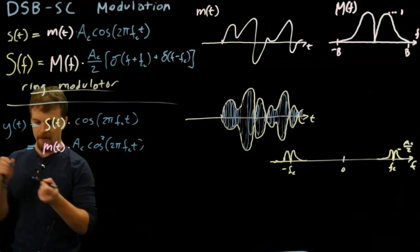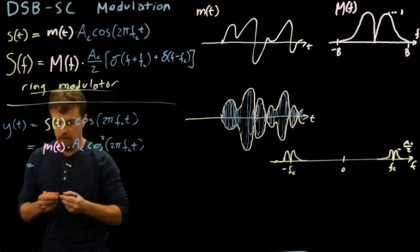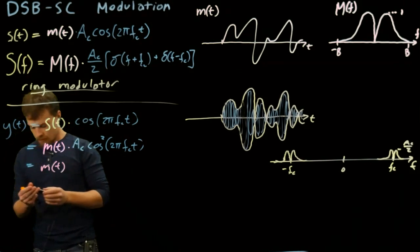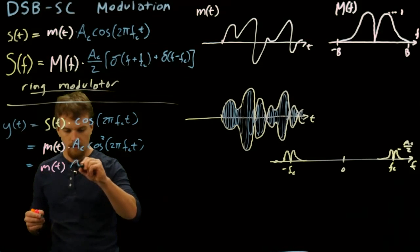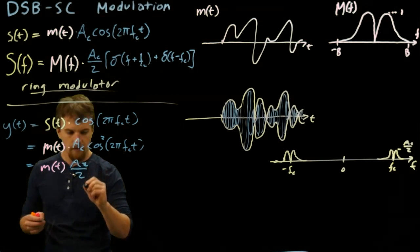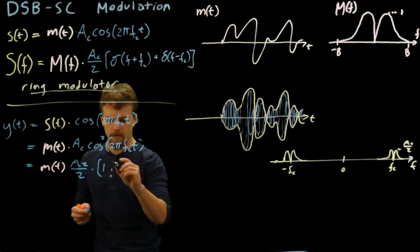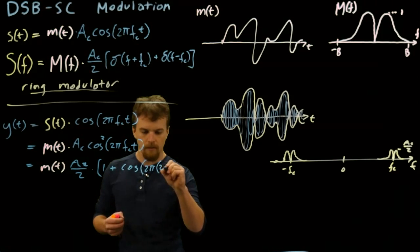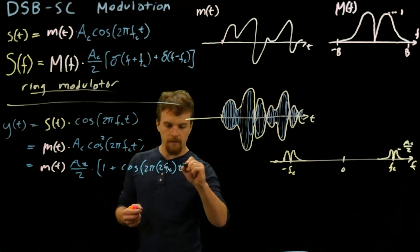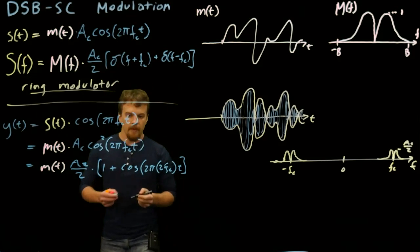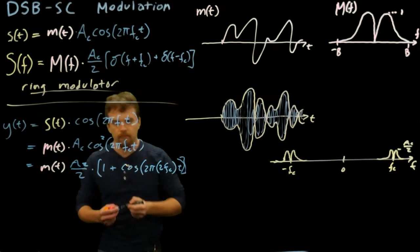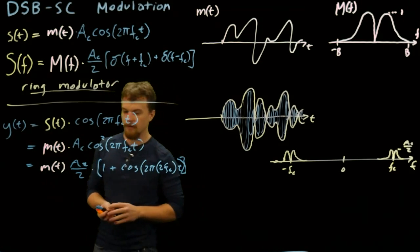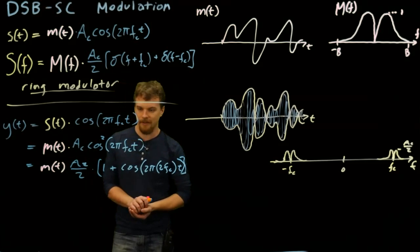We have a little identity to expand cosine squared. This equals m of t times Ac over 2 times 1 plus cosine of twice the frequency, 2 pi 2fc times t. That's just an algebra trick. But that's actually what it does in frequency too.